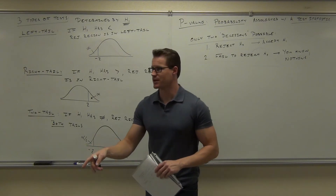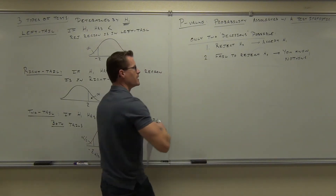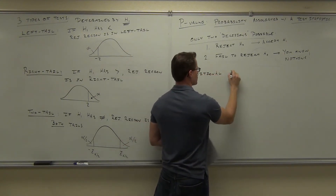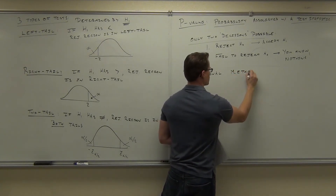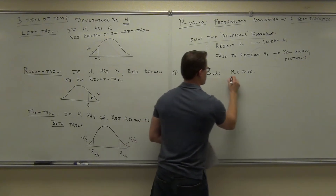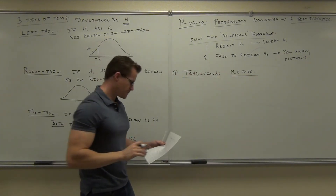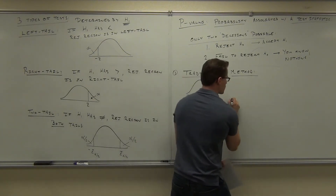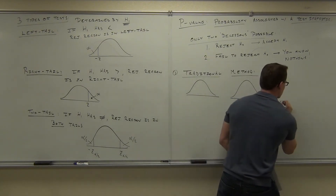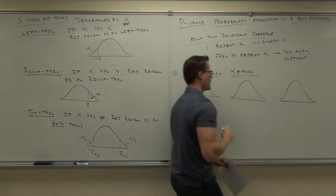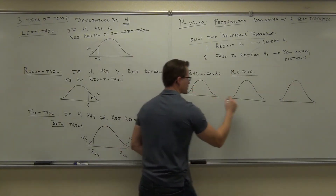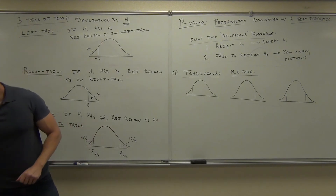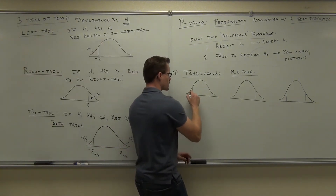Now I'm going to put on the board what I was talking about — the traditional method versus the P-value method. The traditional method takes your left-tail, right-tail, or two-tail test and gives you rejection regions.